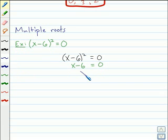And you get x equals 6. Now that's called a double root, because of the two factors of x minus 6. So watch out for these multiple root situations.